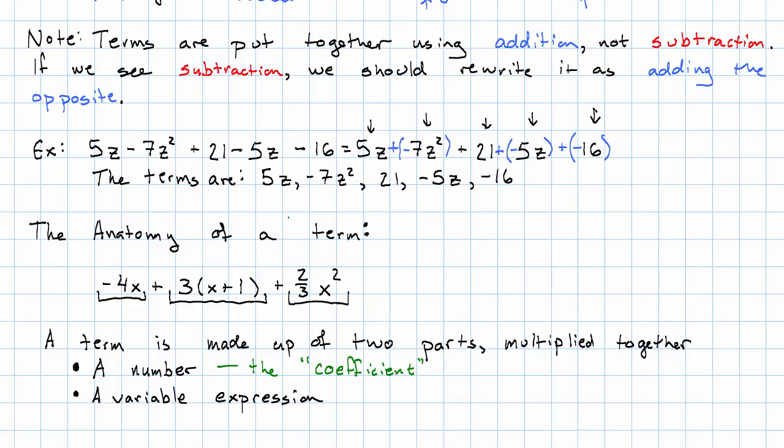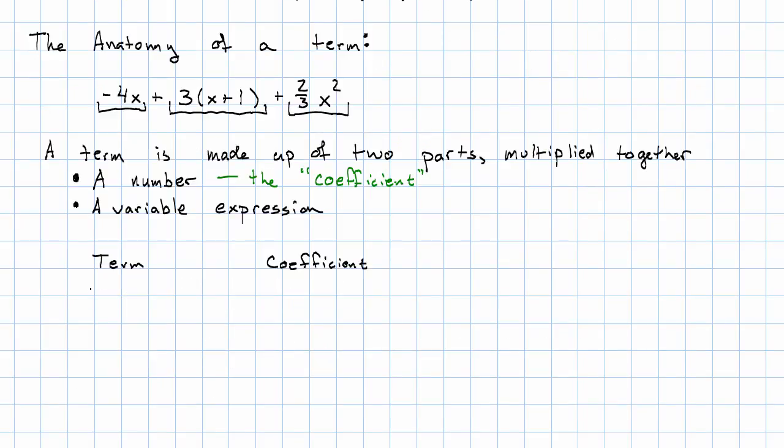So the number part of the term is called the coefficient. In this example, in the term negative 4x, the coefficient is negative 4. In the term 3x plus 1, the coefficient is 3. In the term 2 thirds x squared, the coefficient is 2 thirds. So, the number part of the term is called the coefficient.